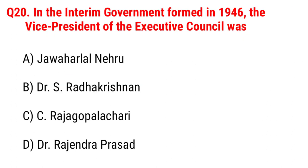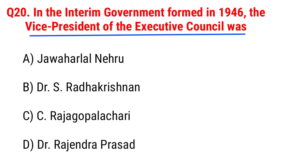Next question: in the interim government formed in 1946, the vice president of the executive council was Option A, Jawaharlal Nehru; B, Dr. Radhakrishnan; C, Rajagopalachari; D, Dr. Rajendra Prasad. The right answer is Option A, Jawaharlal Nehru.